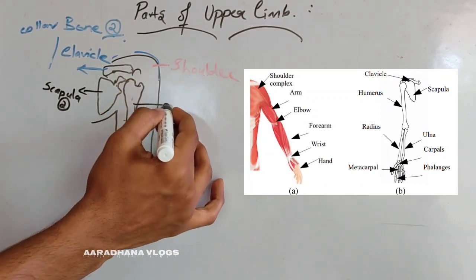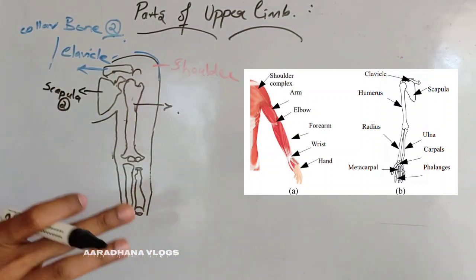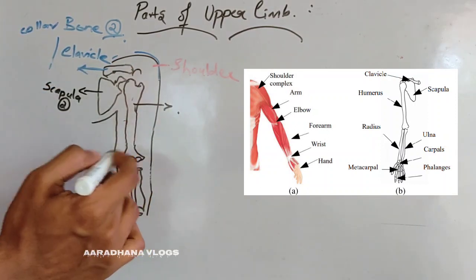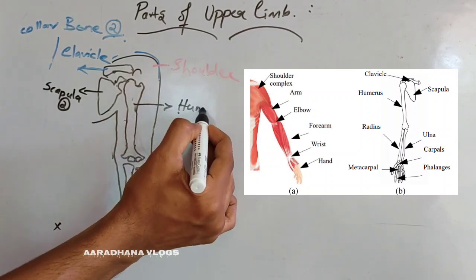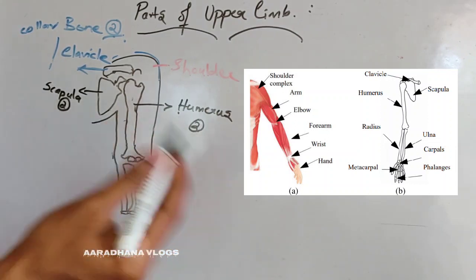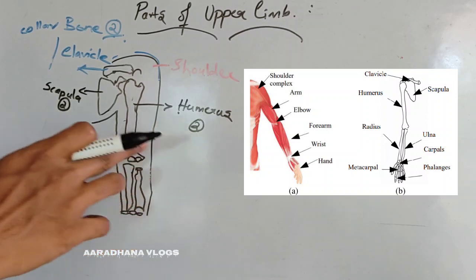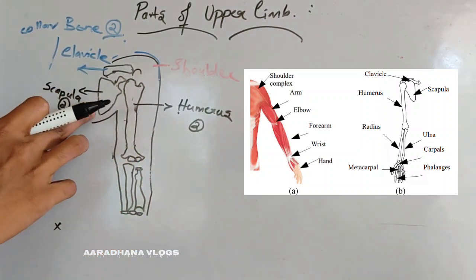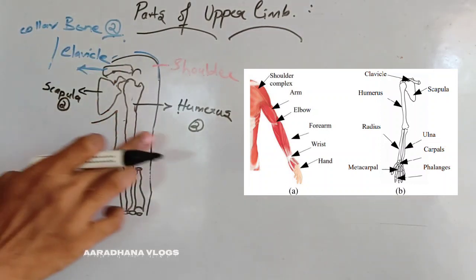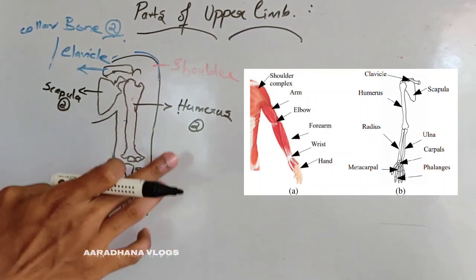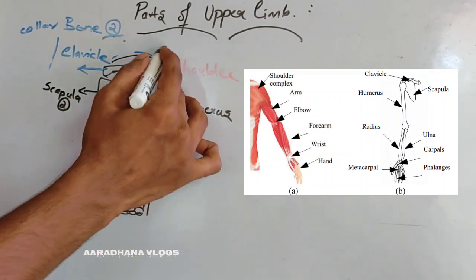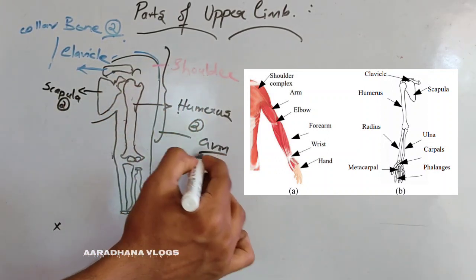The bone which connects the shoulder joint to the elbow region is the humerus bone. The humerus is also two in number — one on the right side, one on the left side. Similarly, the scapula is one on each side and the clavicle is one on each side. When we add both upper limbs, the total number is written accordingly. Up to the elbow region, this is called the arm region.